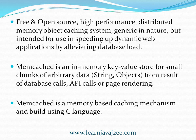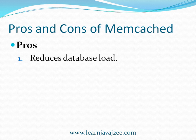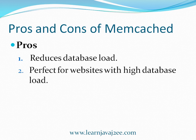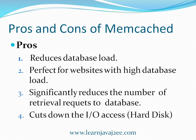Memcached is a memory-based caching system and it is written in C language. Now we'll see the pros and cons of Memcached. First of all, it reduces database loads because it stores lots of data in memory and avoids lots of database calls. This is perfect for websites with high database loads, as it elevates database calls. It also reduces the number of requests to the database. It also cuts down I/O access because most of the data is stored in RAM, which helps in speeding up the application.